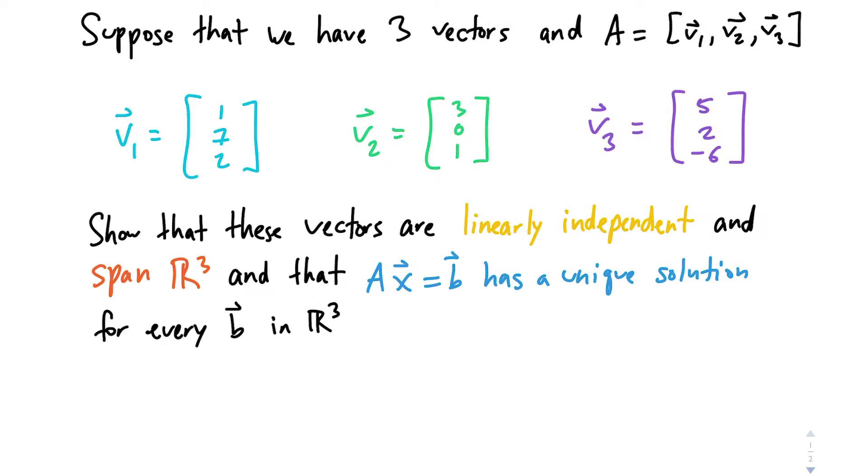All right, so in this problem we have three different vectors and we're defining capital A to be this set of vectors. So we have v1, v2, and v3.